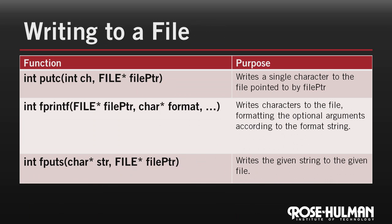Here are the three main C functions for writing to a file. putc is the file output version of putchar. Here's an example. Assuming that outfile points to a file that we opened for writing or appending, this writes an R to the end of the file.